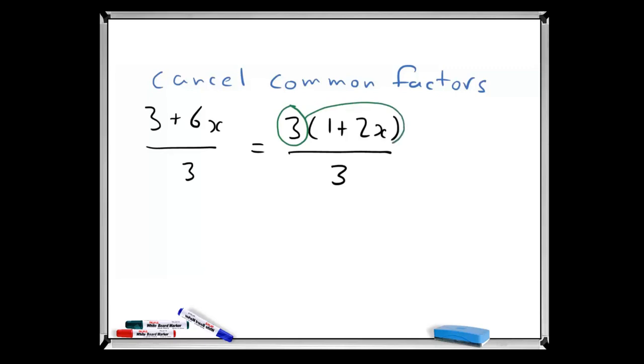3 multiplied by a second factor, doesn't matter what it is, all divided by 3. And that allows us to properly and safely do the cancelling. So on this occasion we end up in fact with 1 plus 2x.